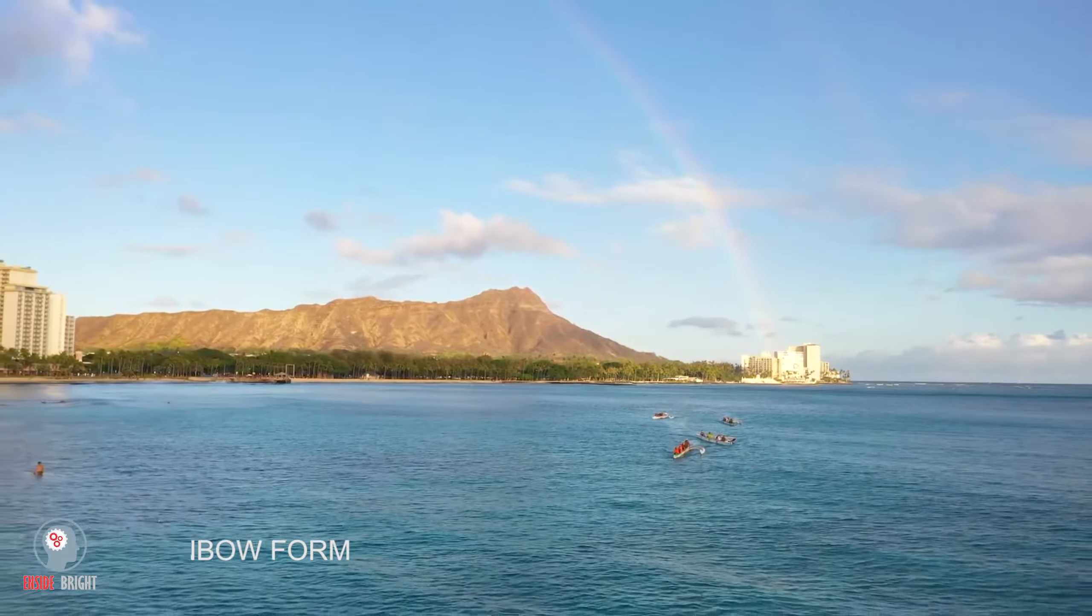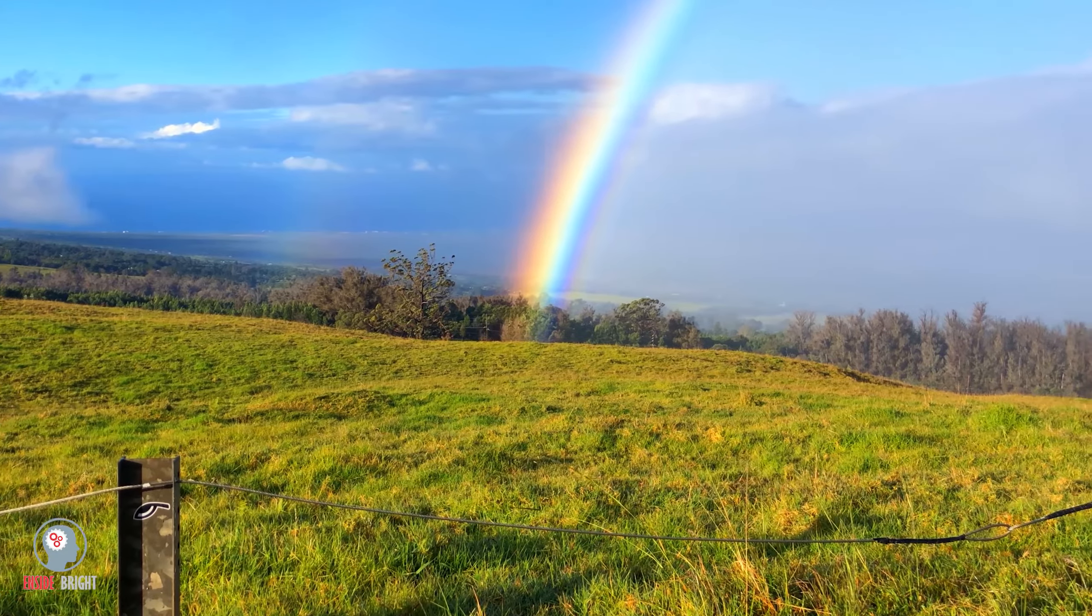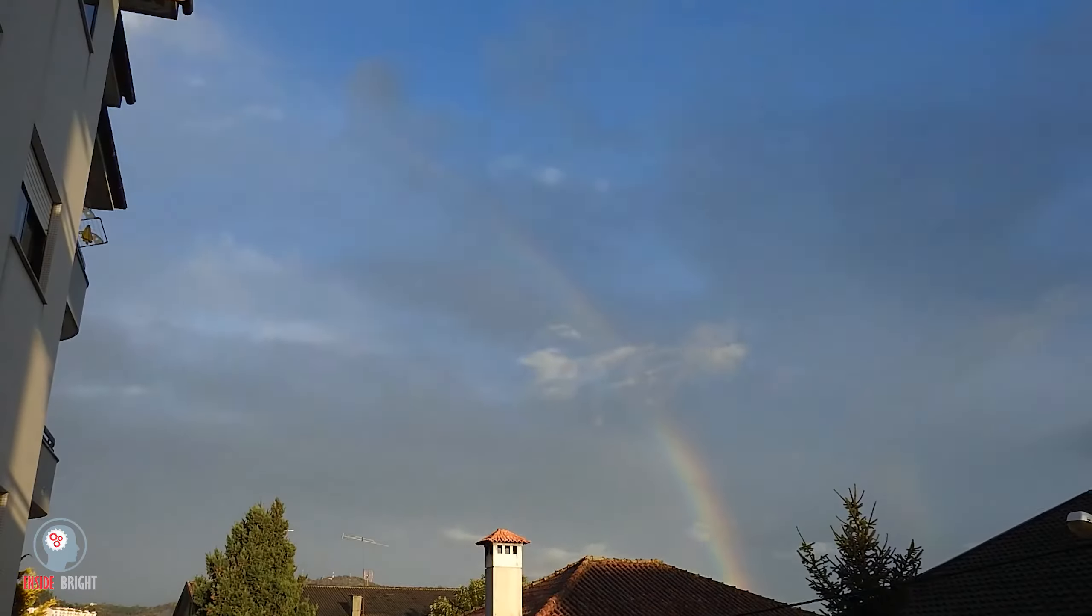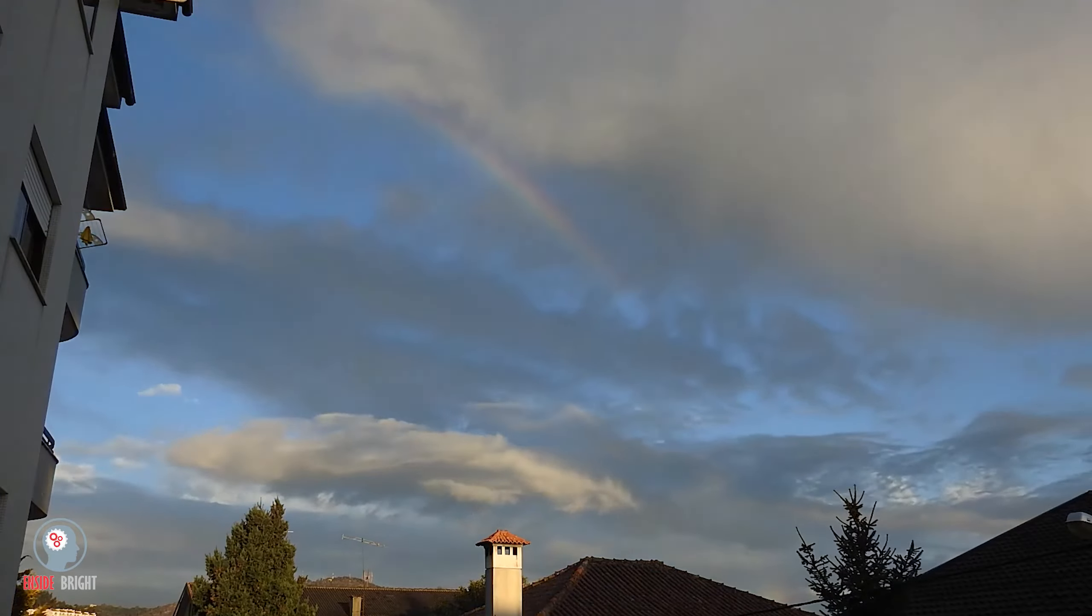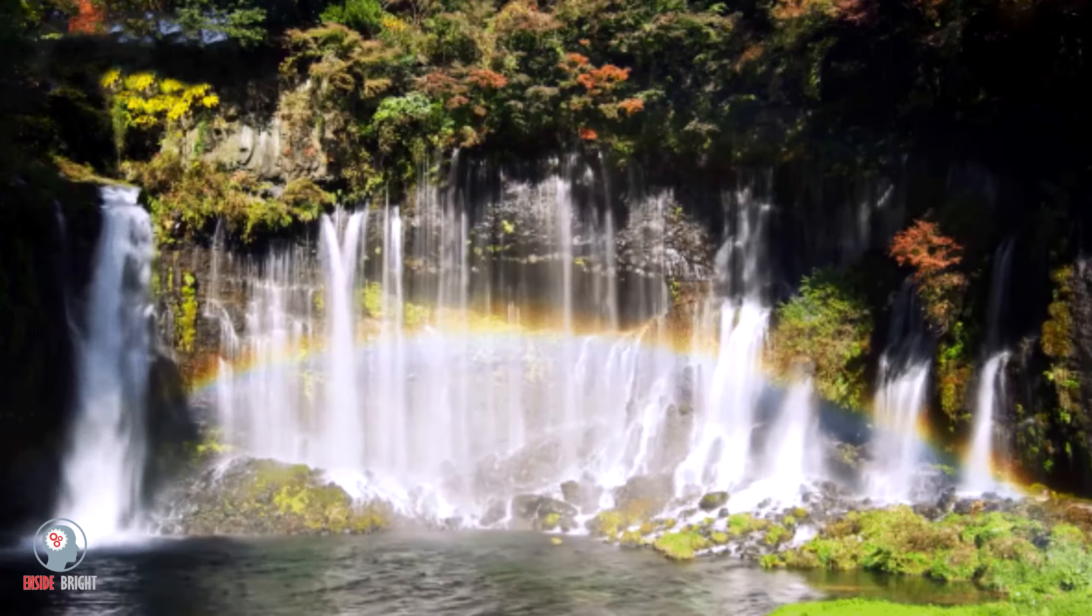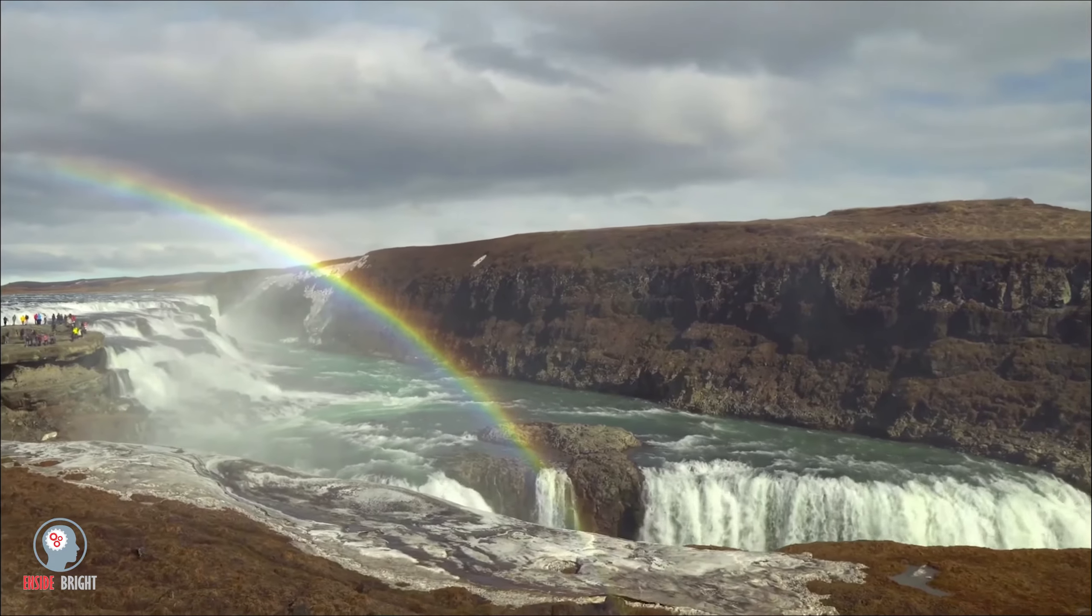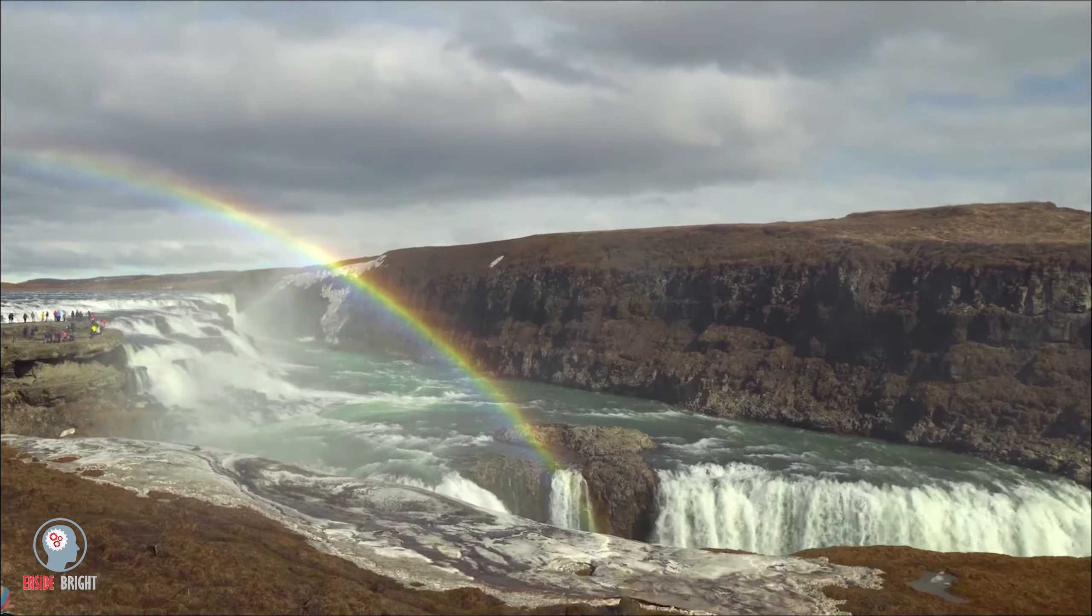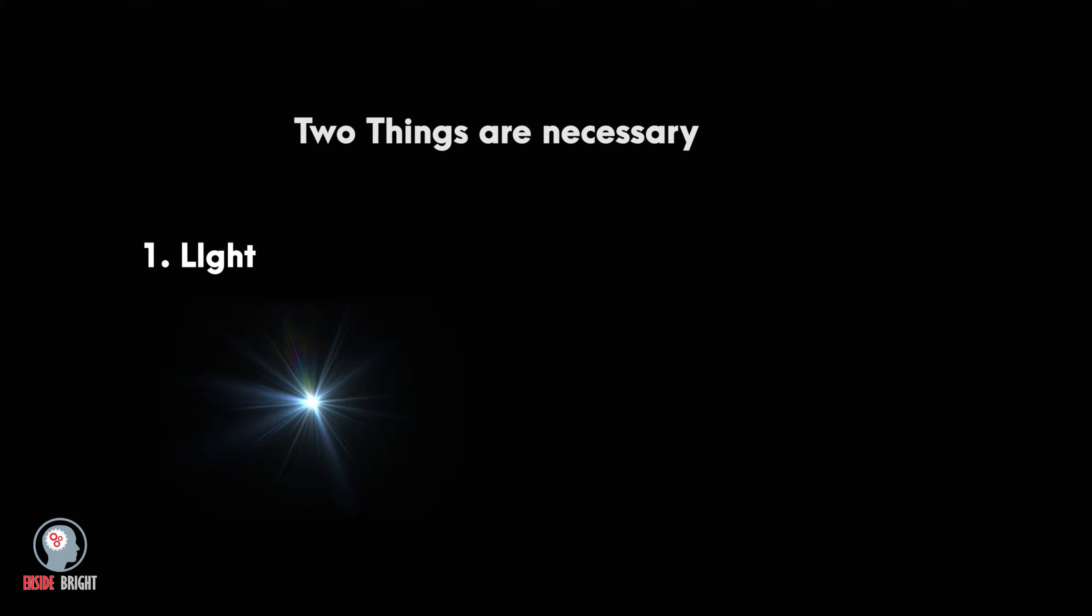A rainbow is one of the most beautiful views of nature that we can usually see after rain, but you'll be surprised to know that you can see it even on sunny days. So why is that and how are rainbows formed? Two things are necessary for the formation of a rainbow: light and water.